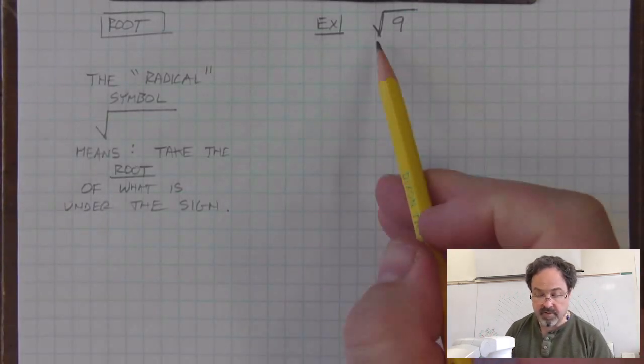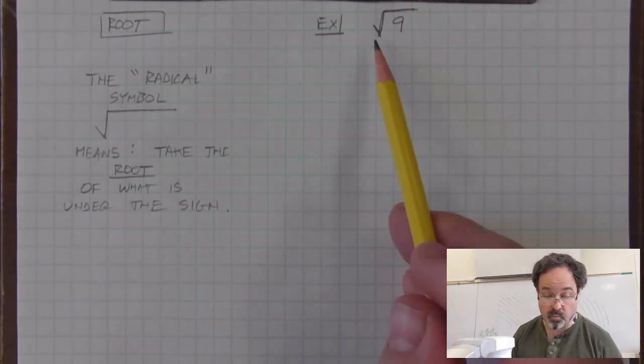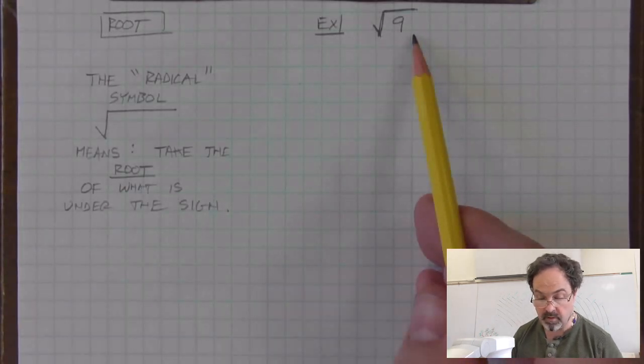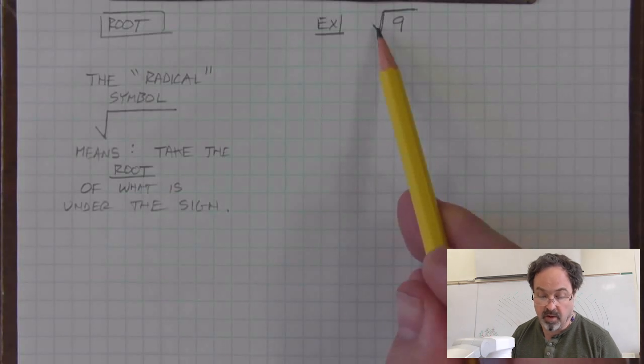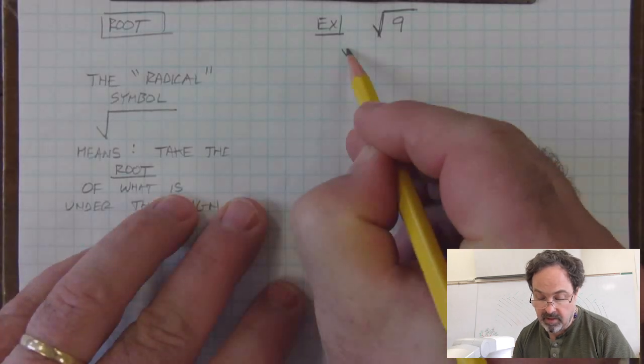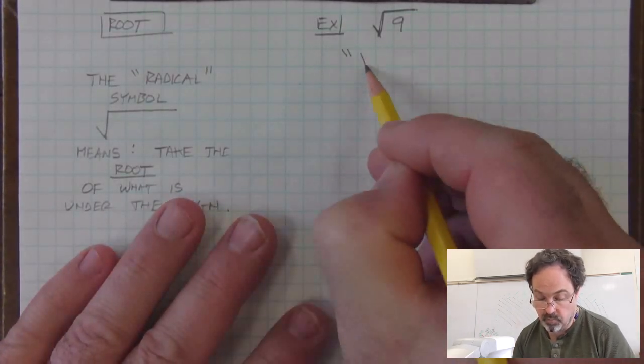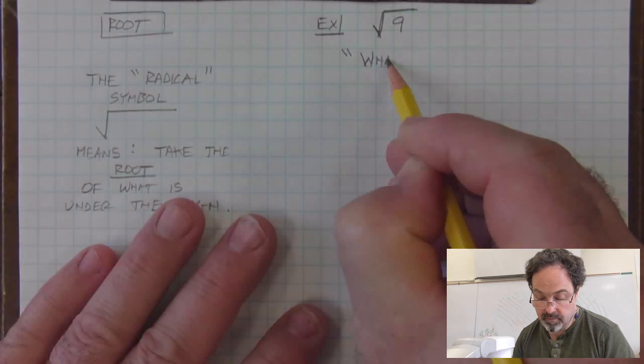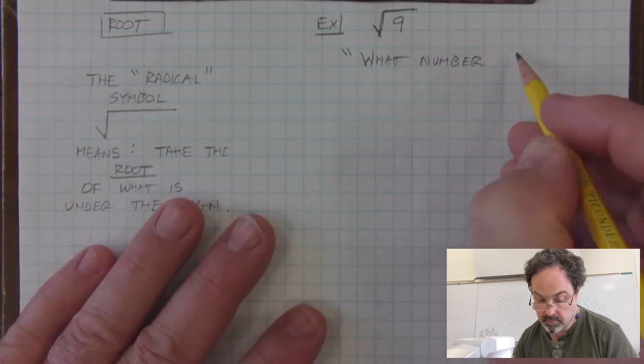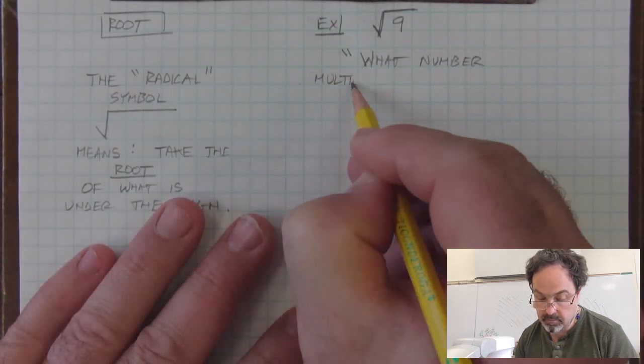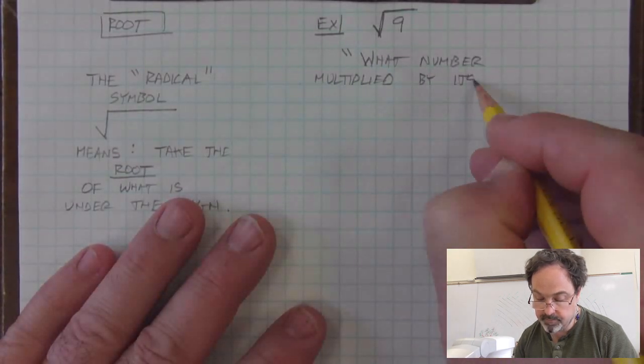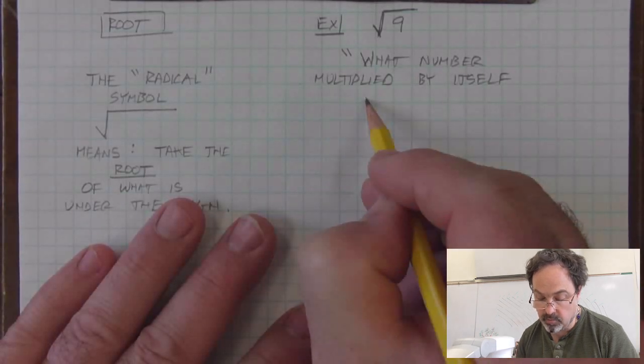In this example, we could say radical 9, or root 9, or what is the root of 9. But what we're thinking in trying to solve that is: what number multiplied by itself equals 9?